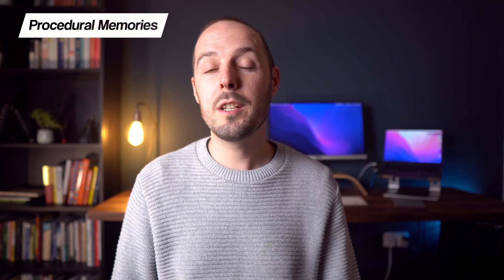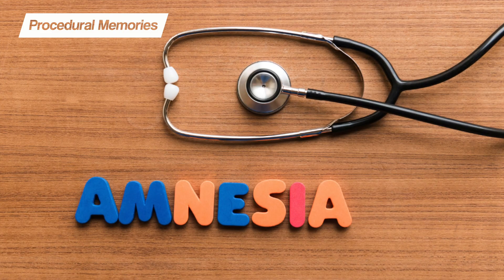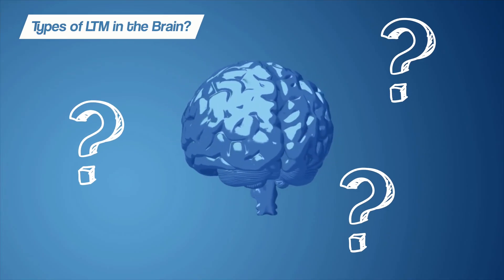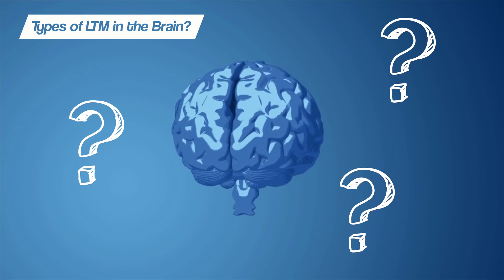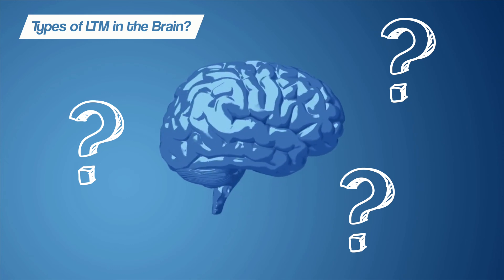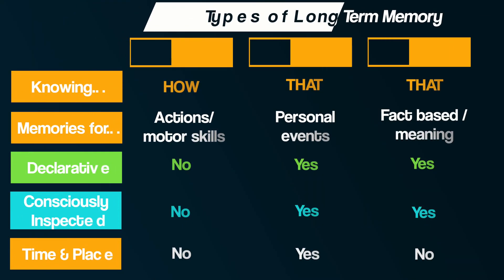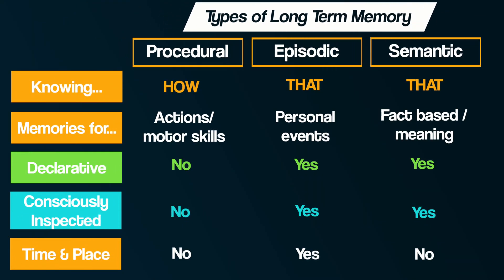There are some other interesting distinctions between these types of long-term memory. Firstly, procedural memories are thought to be much more resistant to forgetting and amnesia — something we'll see in a moment. Secondly, some research suggests that the different types of long-term memory are located in different areas of the brain. Here is a table that helps summarize what we've explored about the different types of long-term memory.